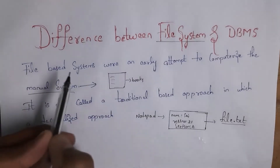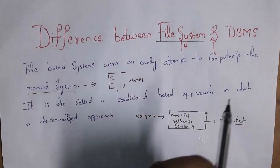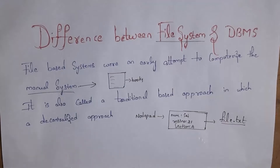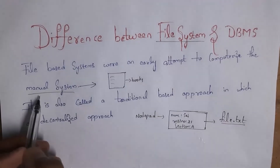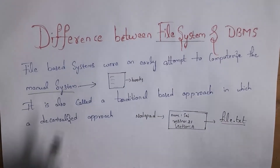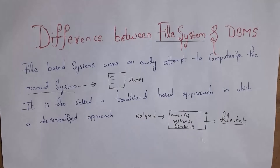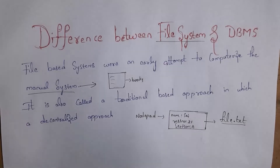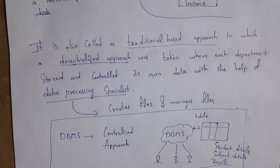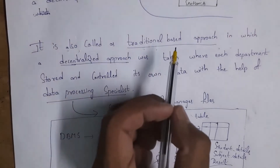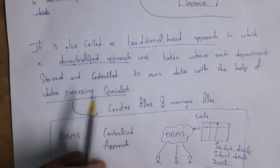File-based systems were an early attempt to computerize the manual system. The manual system is nothing but physical records like books. In olden days when computers were not introduced, we used to store data in books. But later, when computers were first introduced, we used to store our data in files. We also call the file system a traditional-based approach, or we can call it a decentralized approach.